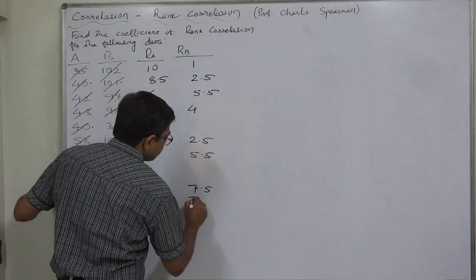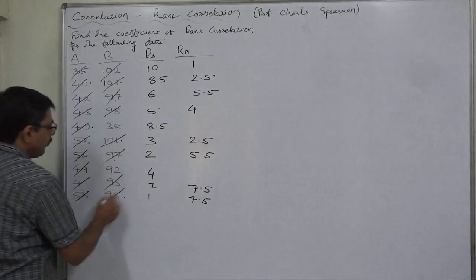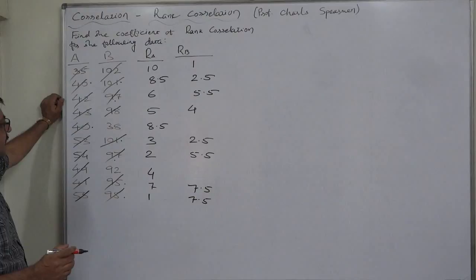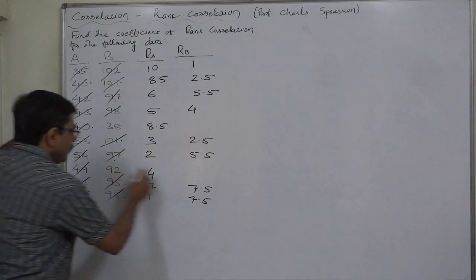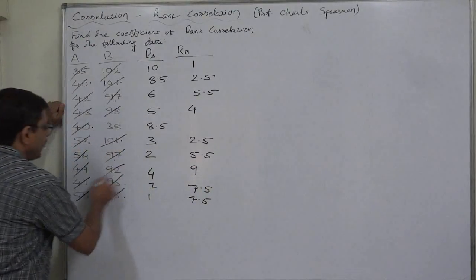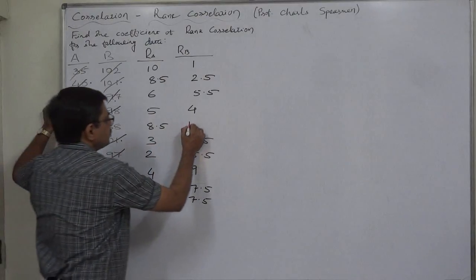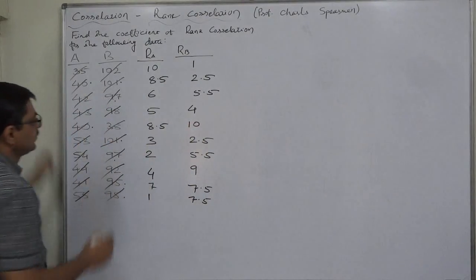7.5 and 7.5. We have already used 7 and 8. So it is turn of 9 that will be rank of 92 and the last smallest value 38 rank 10.